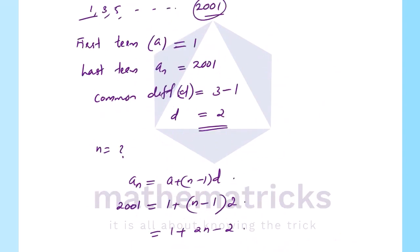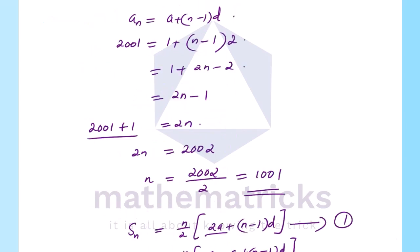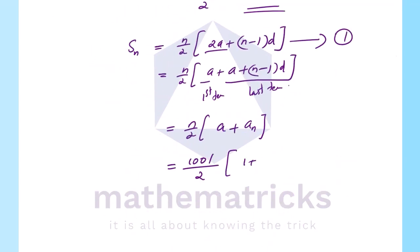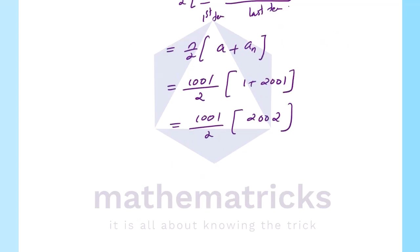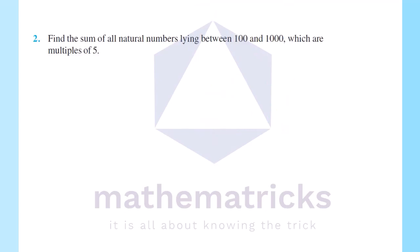The first term is 1 and the last term is 2001. So the sum equals 1001 divided by 2 into 2002. The 2 cancels, giving 1001 into 1001, which equals 1,002,001.